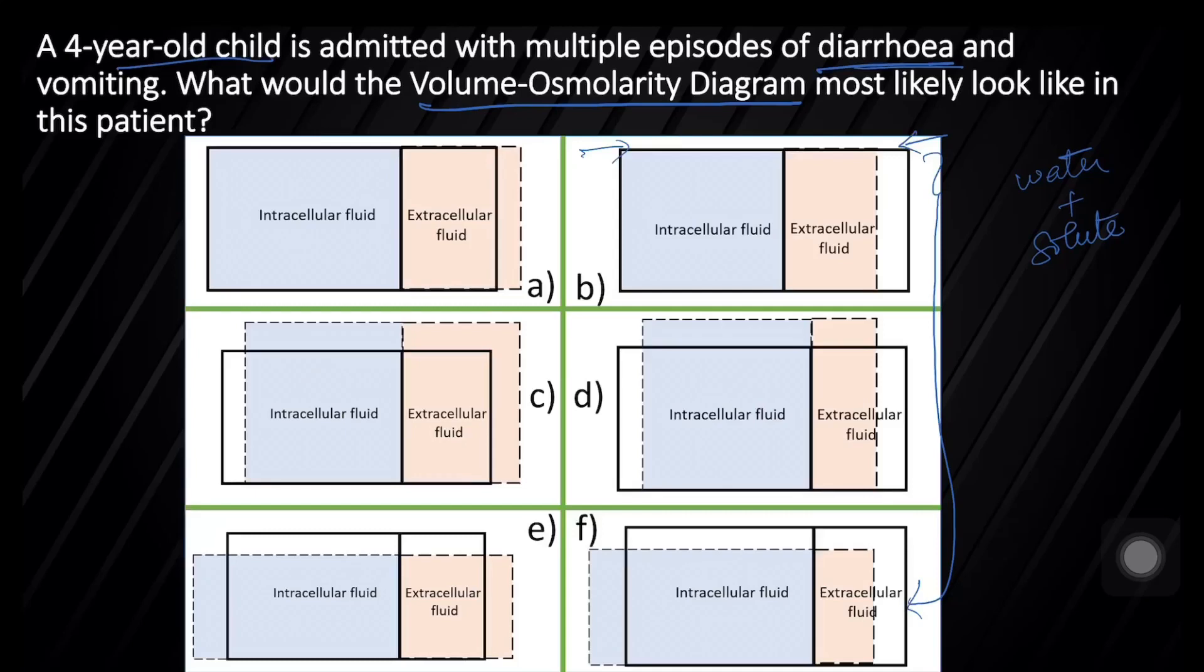So the correct choice is B. This is called isosmotic volume contraction because the final ECF volume is at the same osmolarity and the volume would be lower than the normal value.